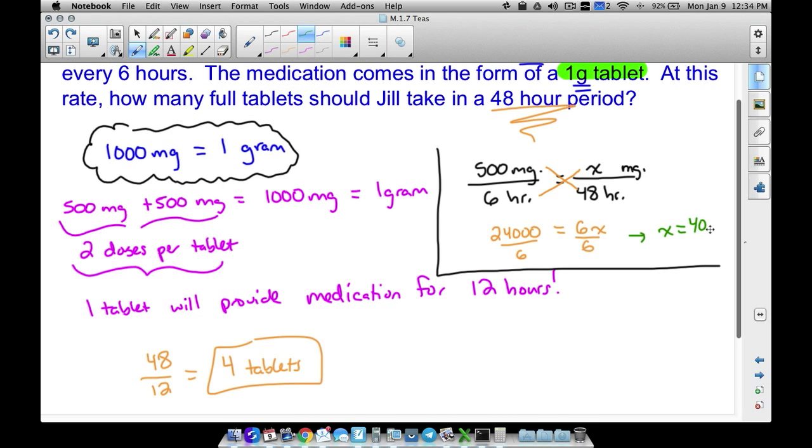So what the heck does this mean? 4,000. We just solve for that X. 500 milligrams in six hours is going to be the same thing as getting 4,000 milligrams in 48 hours. What's important to note now though, is that the question didn't say how many milligrams does Jill get? It says at this rate, how many tablets should Jill take in a 48 hour period? Remember a tablet is one gram. One gram is a thousand milligrams.